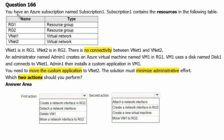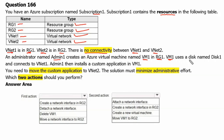Question 166. You have an Azure subscription named Subscription 1. Subscription 1 contains the resources in the following table. We have RG1 and RG2 as resource groups in Subscription 1. VNet1 is a virtual network in RG1 and VNet2 is a virtual network in RG2. There is no connectivity between VNet1 and VNet2. An administrator named Admin1 creates an Azure virtual machine named VM1 in RG1. VM1 uses a disk named Disk1 and connects to VNet1. Admin1 then installs a custom application on VM1. You need to move the custom application to VNet2. The solution must minimize administrative efforts. Which two actions should you perform?